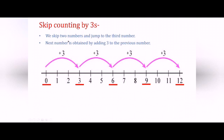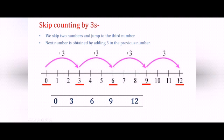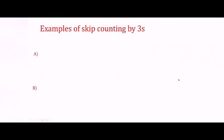Here you can see the next number is obtained by adding 3 to the previous number. We have 0 plus 3 giving 3, then 3 plus 3 giving 6, 6 plus 3 giving 9, and 9 plus 3 giving 12. Now let's see some examples of skip counting by 3s. We add 3 to the previous number to get the next number in skip counting by 3s.